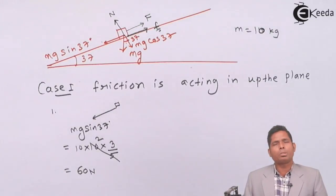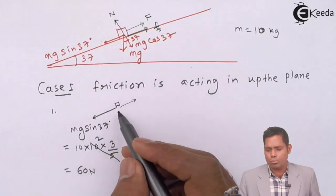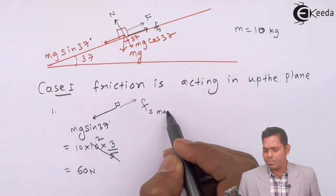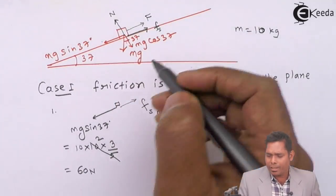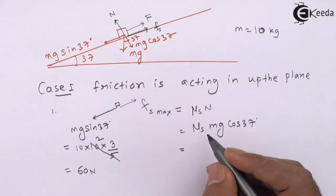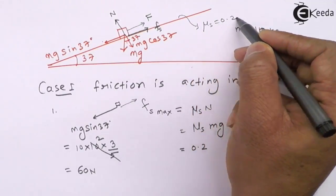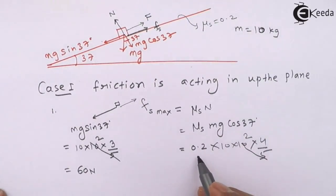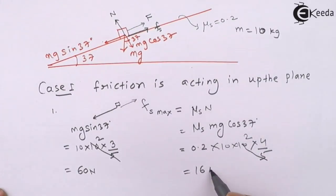How much force can friction provide? The friction acts upward because the body has a tendency to move down. The limiting friction is Fs_max = μs × N, and N = Mg cos 37. So Fs_max = 0.2 × 10 × 10 × cos 37 = 0.2 × 10 × 10 × 4/5 = 16 Newton. So the maximum resistance friction can provide is 16 Newton.